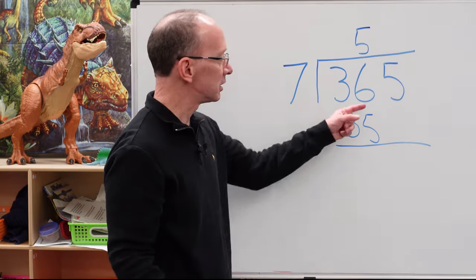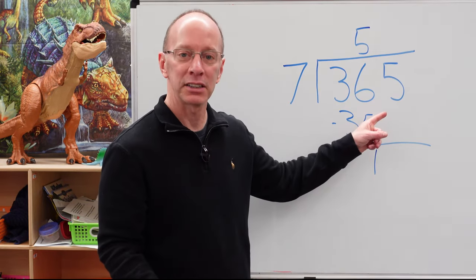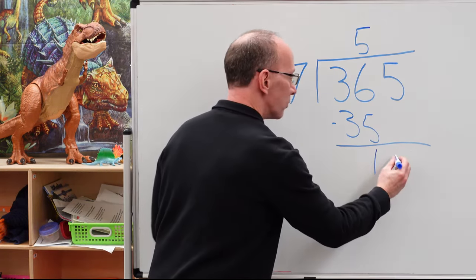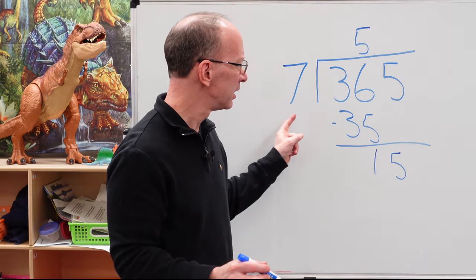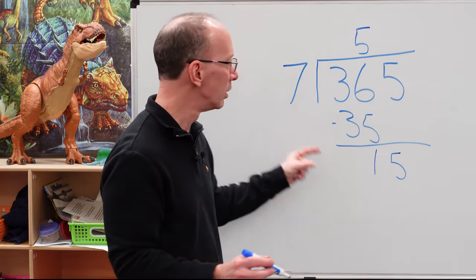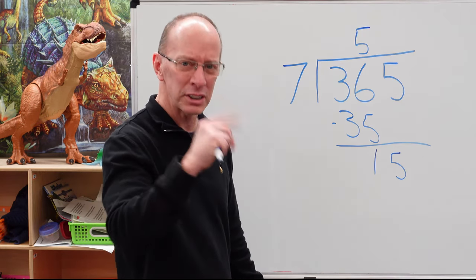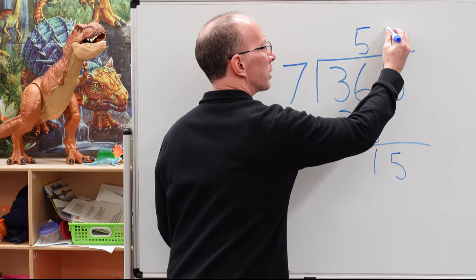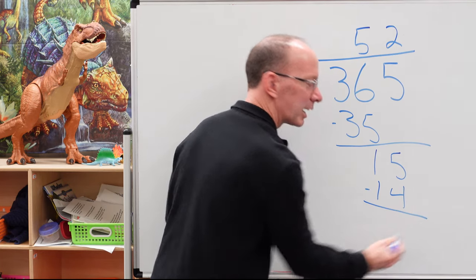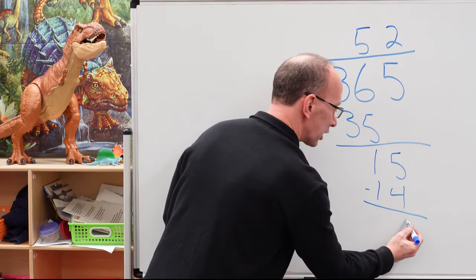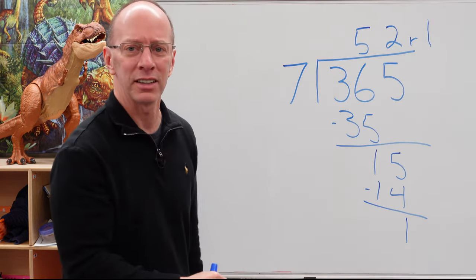Subtract it. Six minus five, one. Put the one right there. Drop that next number down. Boom. Drop it down. Right here. 15. How many times can I put seven into 15? I tricked you there, didn't I? Seven only goes into 15 two times. Two times seven equals 14. So we're going to put right here, two times seven equals 14. I got you on that one. And there's a remainder. We're going to put a one right there. And our remainder is one. I knew you could handle it.